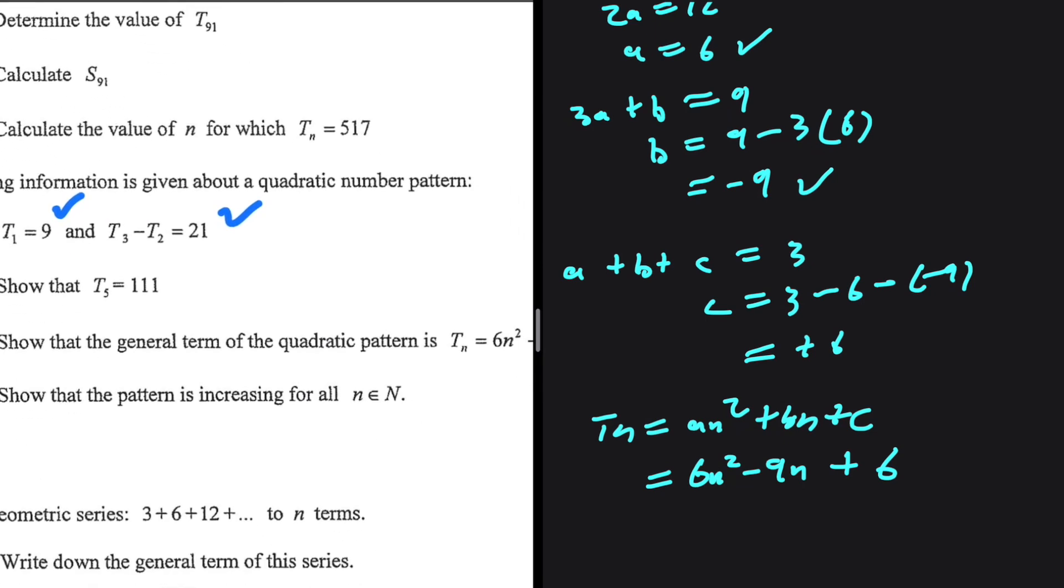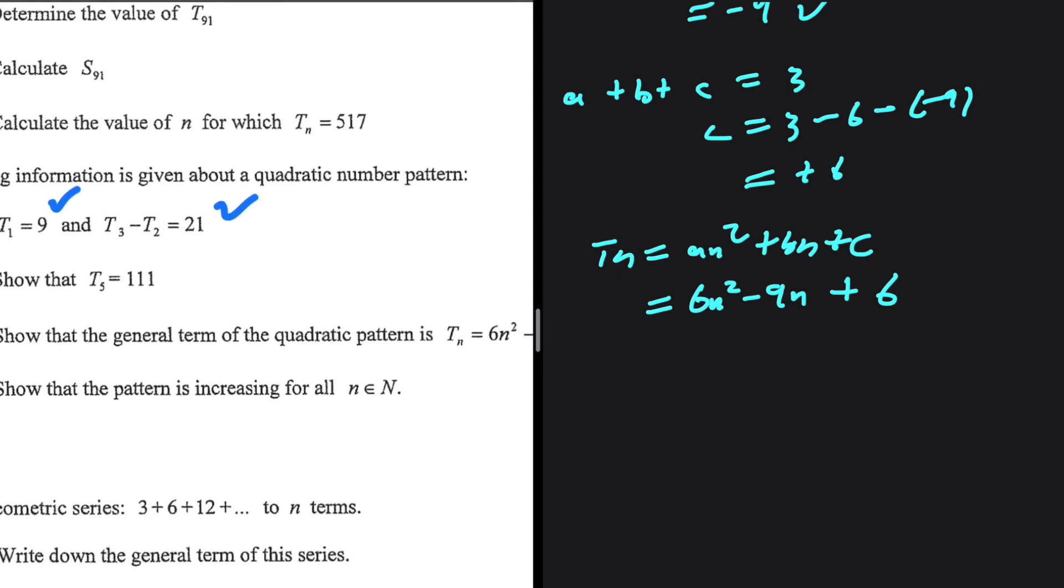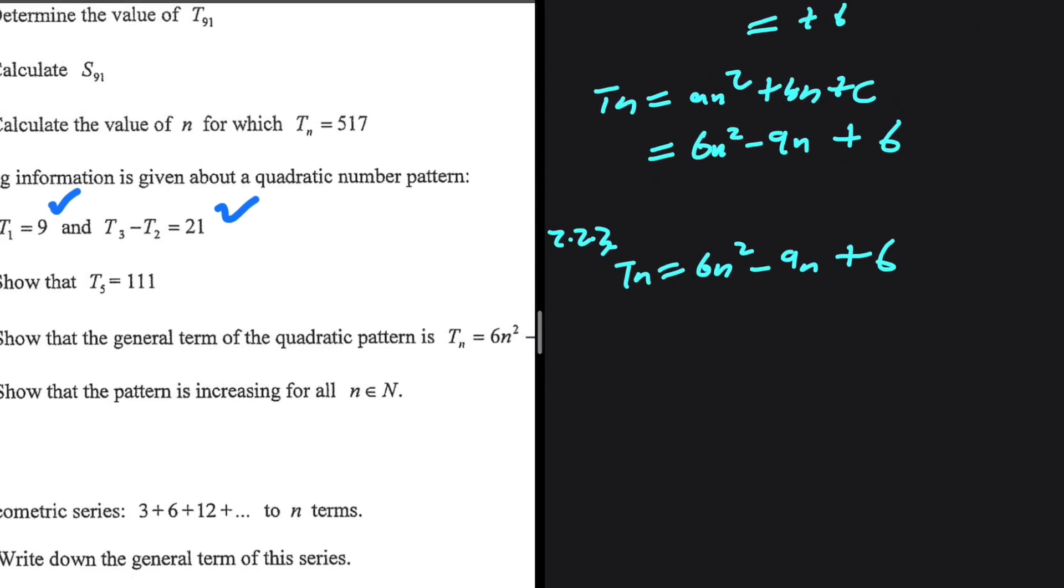2.2.3 shows that the pattern is increasing for all n elements of natural numbers. Right, so 2.2.3. I'm not quite sure which approach we're supposed to take, but let me show you what I need. I know that Tn equals 6n squared minus 9n plus 6. If we derivate this, we're going to get 12n minus 9 using the power rule. So the first derivative will give you the equation for the gradient.